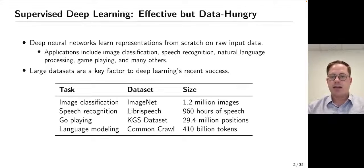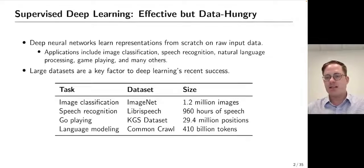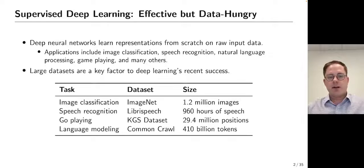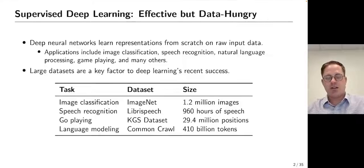Here are some tasks and corresponding datasets that have been used for training deep neural networks. One unifying theme is their vast scale, with sizes often in the millions or billions, that allow the neural networks to learn rich representations. Another aspect of the standard supervised deep learning paradigm is that the space of outputs is fixed and known ahead of time. For example, if we want to train an image classifier on ImageNet, we know that there are a thousand classes and that doesn't change even at test time.